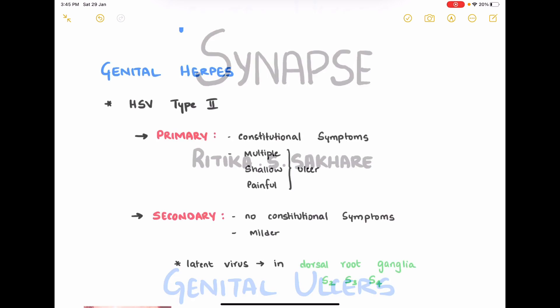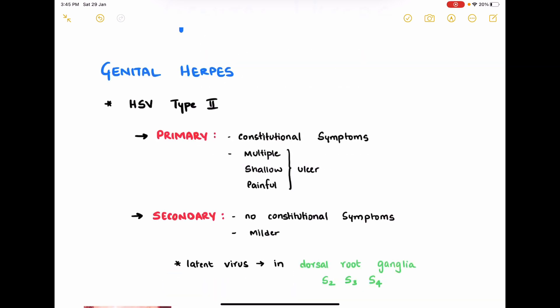Let us start with genital herpes, which is commonly caused by herpes simplex virus type 2, although type 1 can also cause this but it is majorly type 2. In primary herpes infection, the patient is affected by the virus for the first time and will have constitutional symptoms such as fever, malaise, and genital ulcers which are multiple, shallow, and painful.